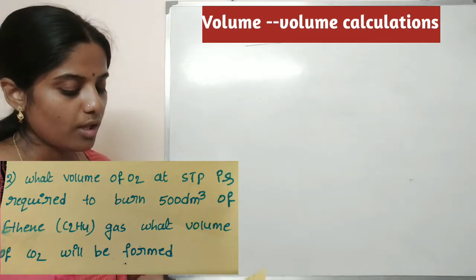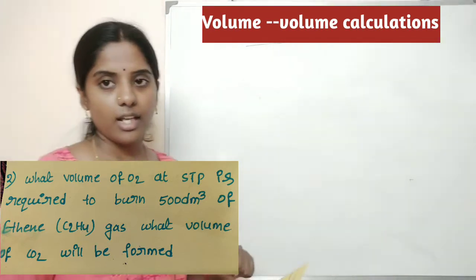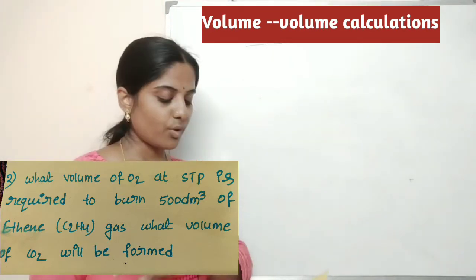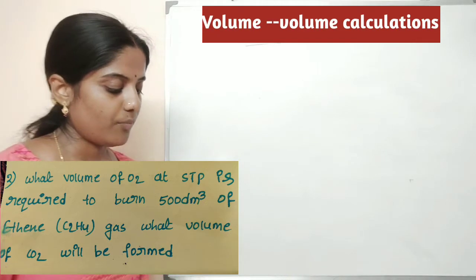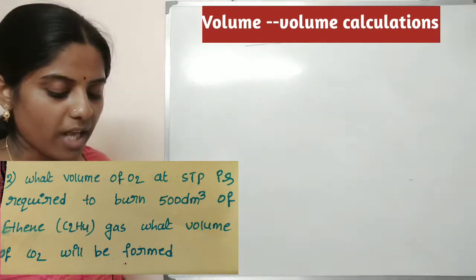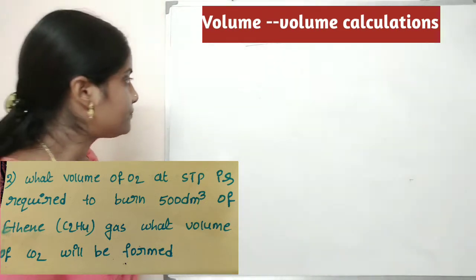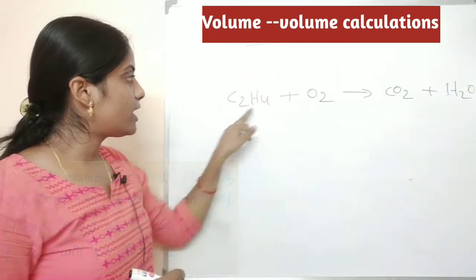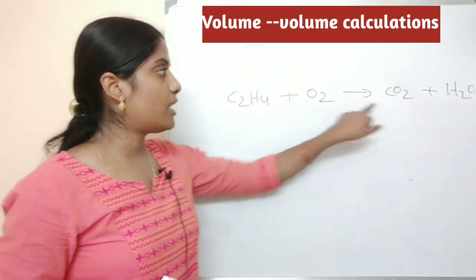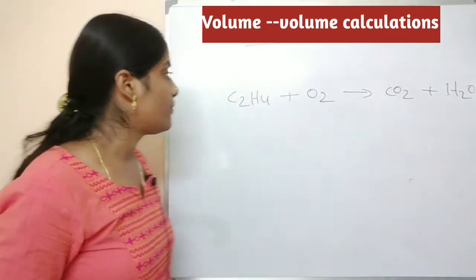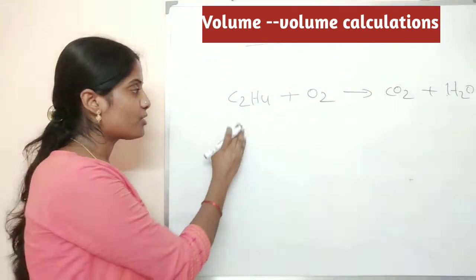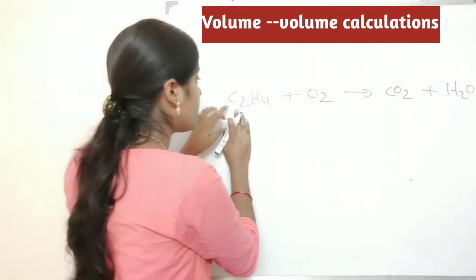Now for the second problem involving CO₂ and oxygen — the reaction is ethyne. Ethyne reacts with oxygen and can form carbon dioxide and water. We need to balance this equation.